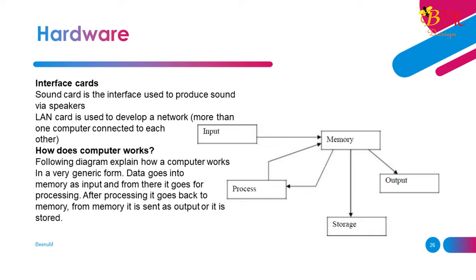How does a computer work? Data goes into memory as input, and from there it goes for processing. After processing, it goes back to memory. From memory it is sent as output, or it is stored.